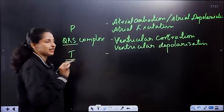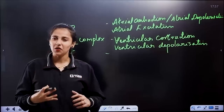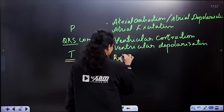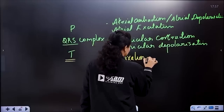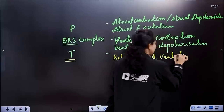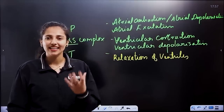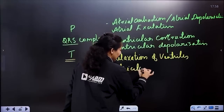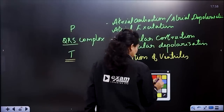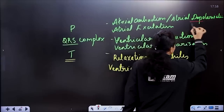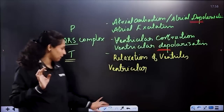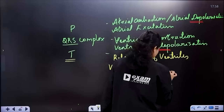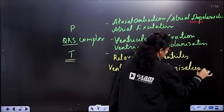Then the last T wave represents relaxation of ventricles. So ventricular contraction is depolarization, and ventricular relaxation is repolarization. The T wave represents ventricular repolarization, which means relaxation.